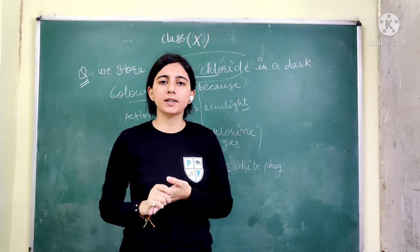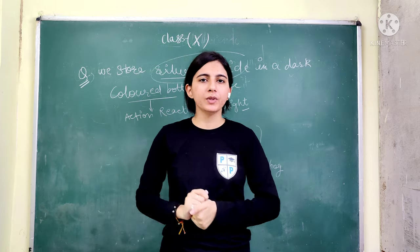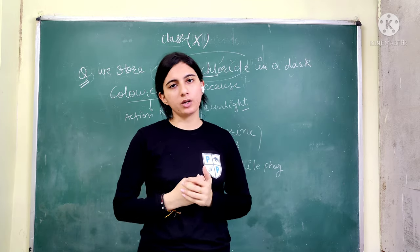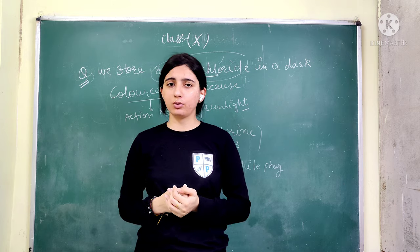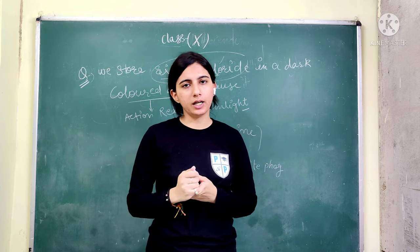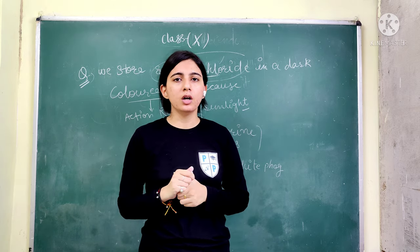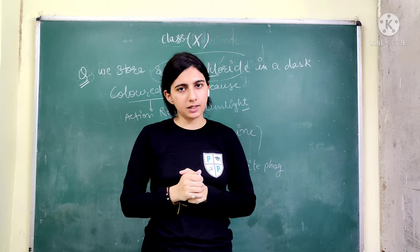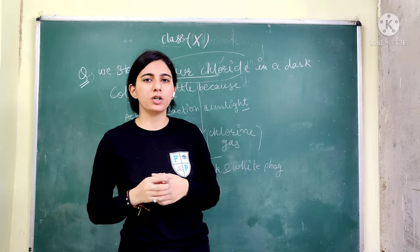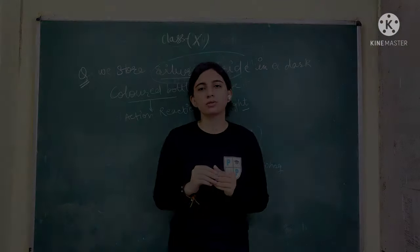So the answer to why we keep silver chloride in dark-colored bottles is its sensitivity to sunlight. I hope you liked all these questions and understood them. If you like the video, please share it and subscribe to our channel. Thank you so much.